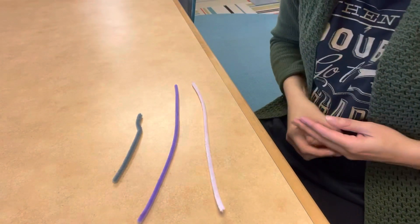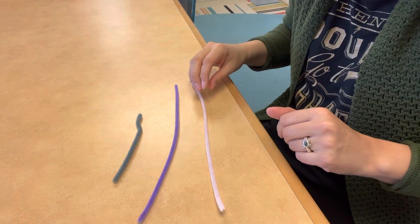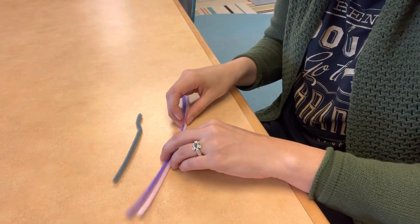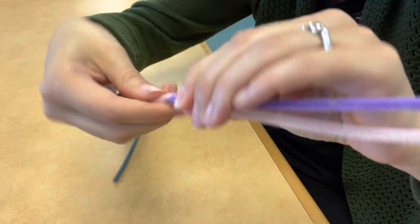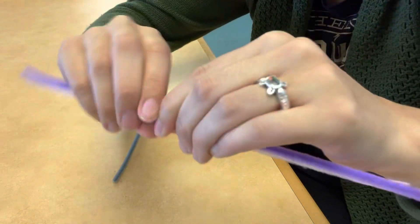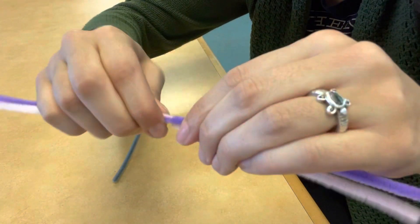Okay, so for the rings, we're going to start with three pipe cleaners, two long ones and one short one. We're going to take the two long ones and twist them in the middle like this. You can twist it about five to seven times.